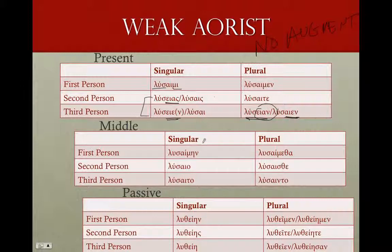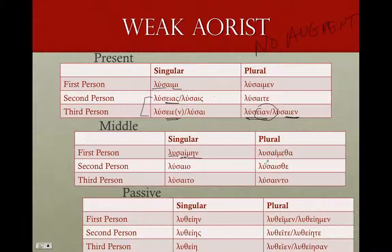In the middle, no problems — perfectly regular. Our aorist stem, alpha theme vowel, iota mood marker, and then our endings. So: λυσαίμην, λύσαιο — intervocalic sigma drops out — λύσαιτο, λυσαίμεθα, λύσαισθε, λύσαιντο.